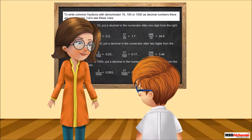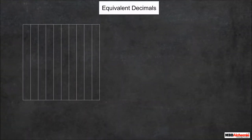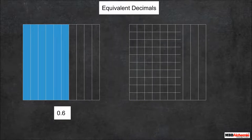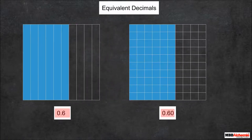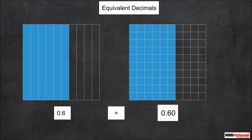Now, do you remember equivalent decimals? If I divide a square into 10 parts and highlight 6 out of 10 parts, it represents 0.6. If I divide the square further into 100 parts and highlight 60 parts, it will be 0.60. As the shaded portion in both cases is the same, these two decimal numbers are equal. This indicates that a zero after the last digit following the decimal point is meaningless, so 0.6 equals 0.60.